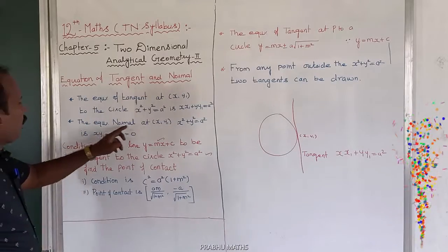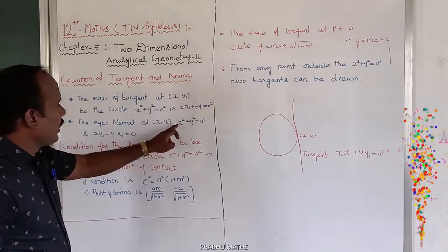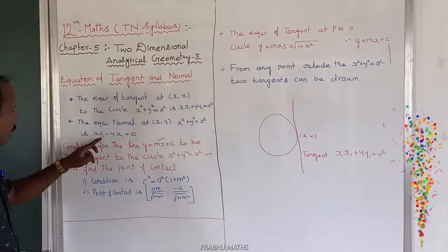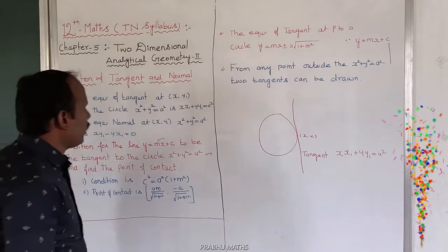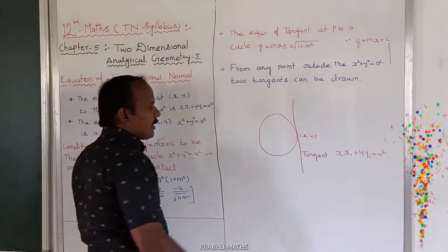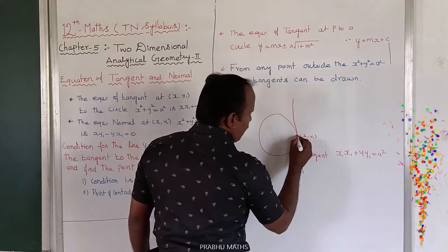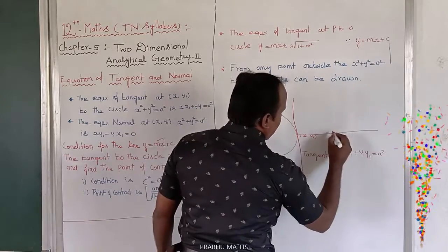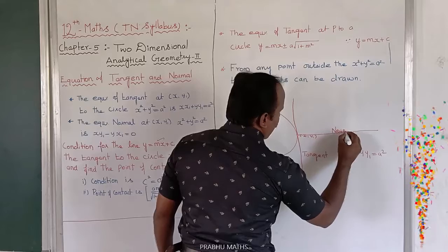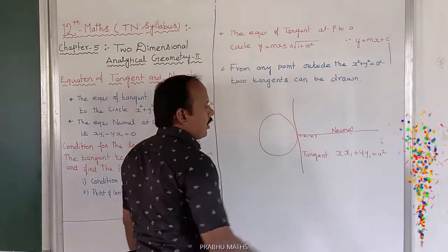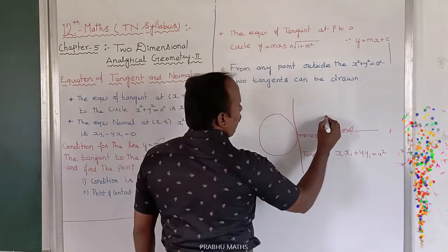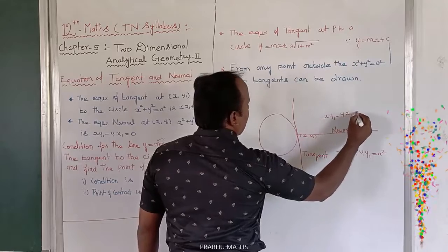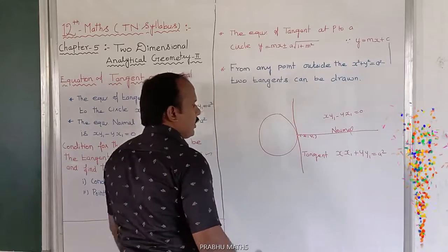The equation of the normal at (x1, y1) on the circle x² + y² = a² is: xy1 - yx1 = 0. This is the normal equation, which is perpendicular to the tangent equation. So the formula is xy1 - yx1 = 0.